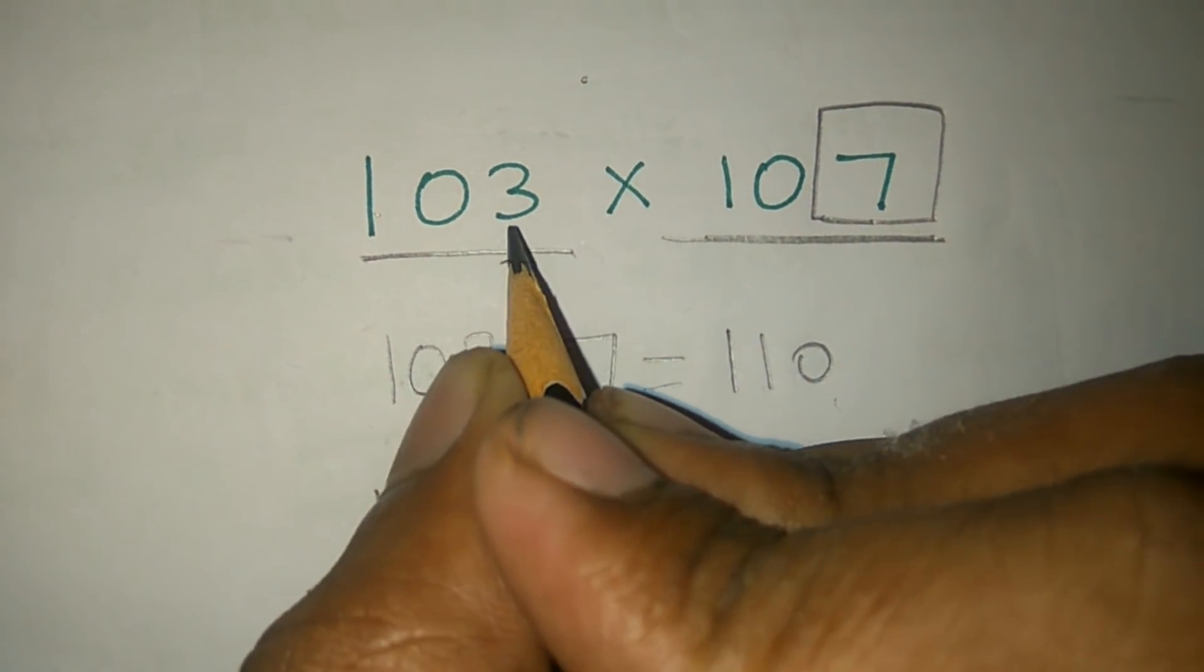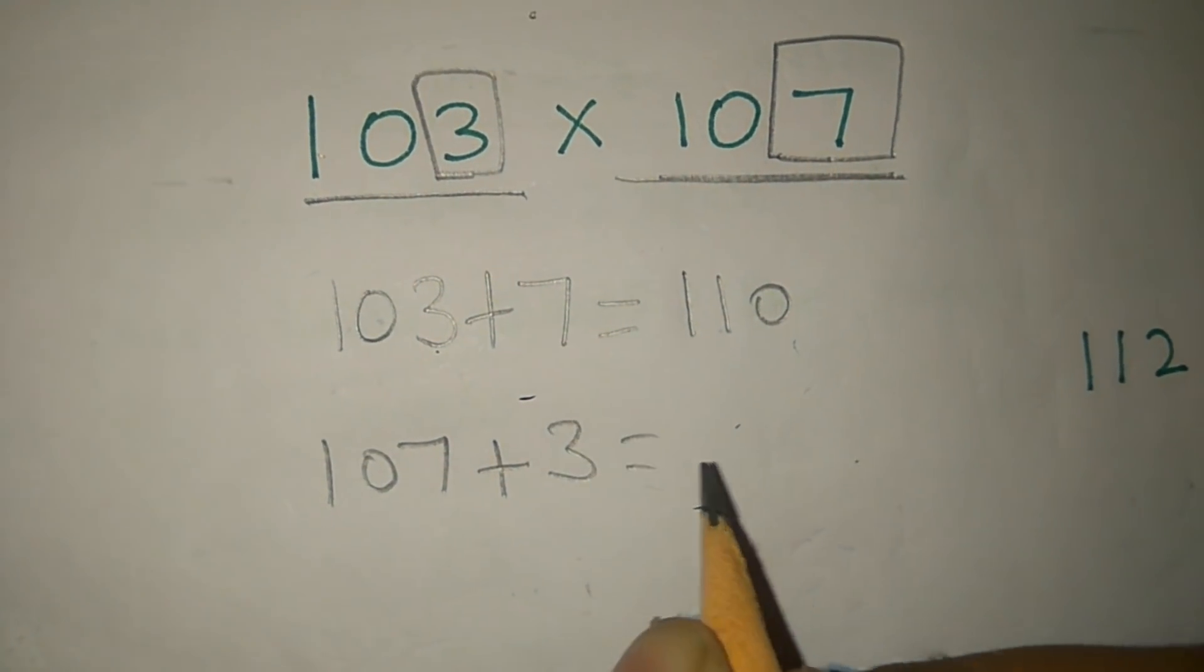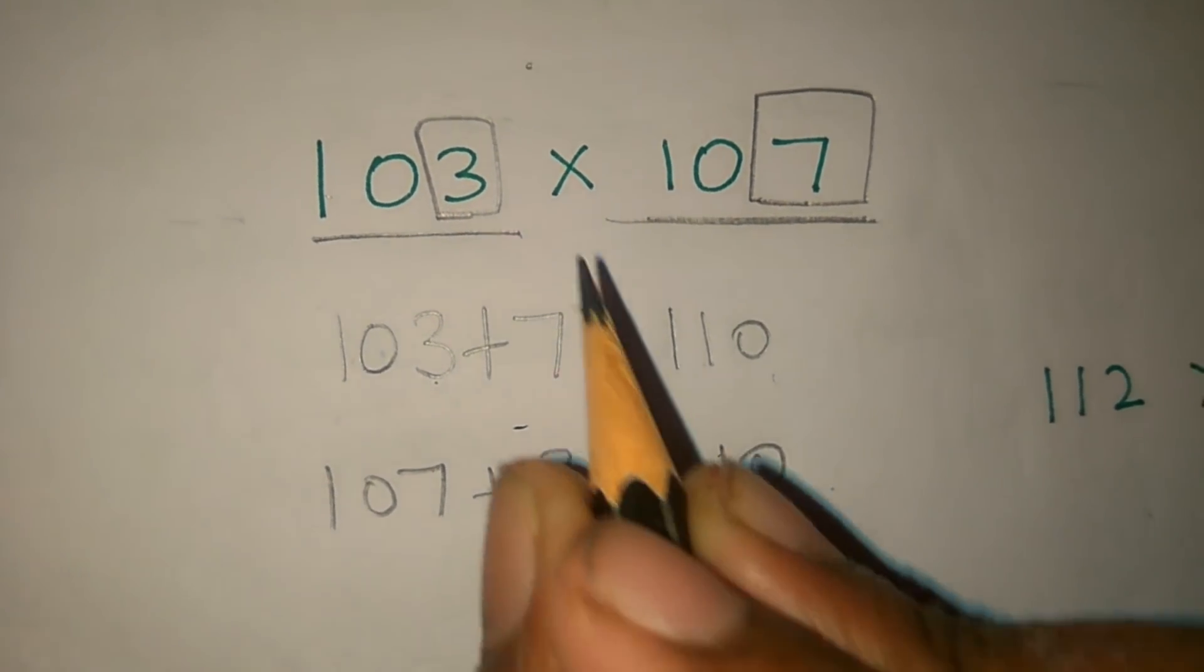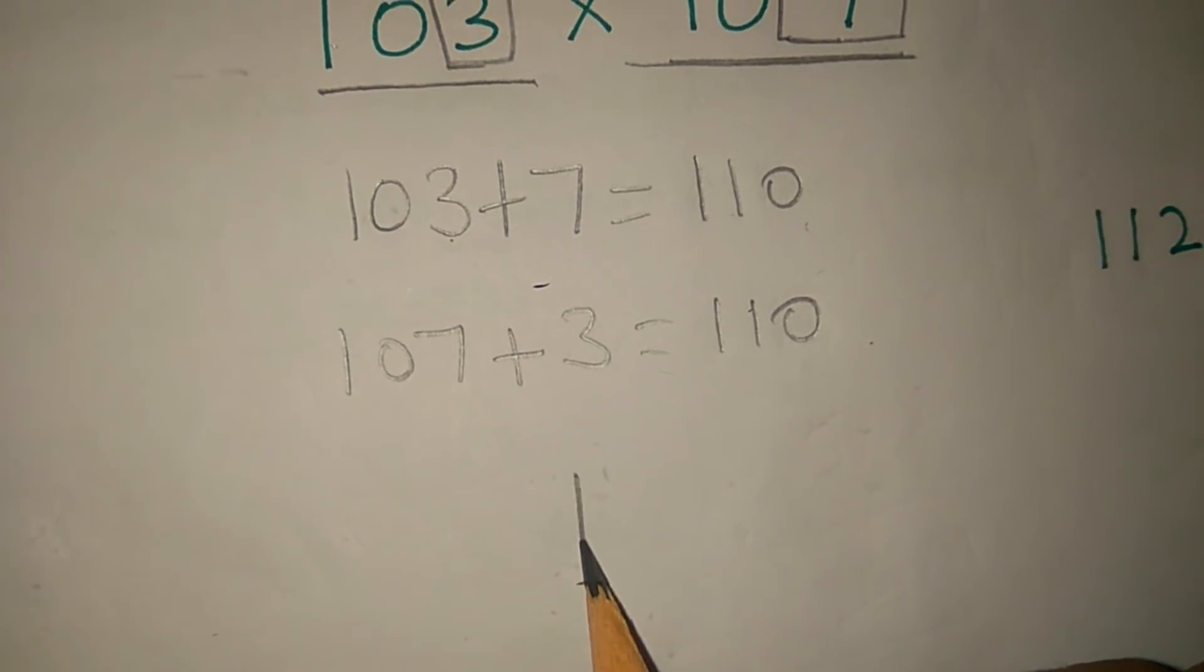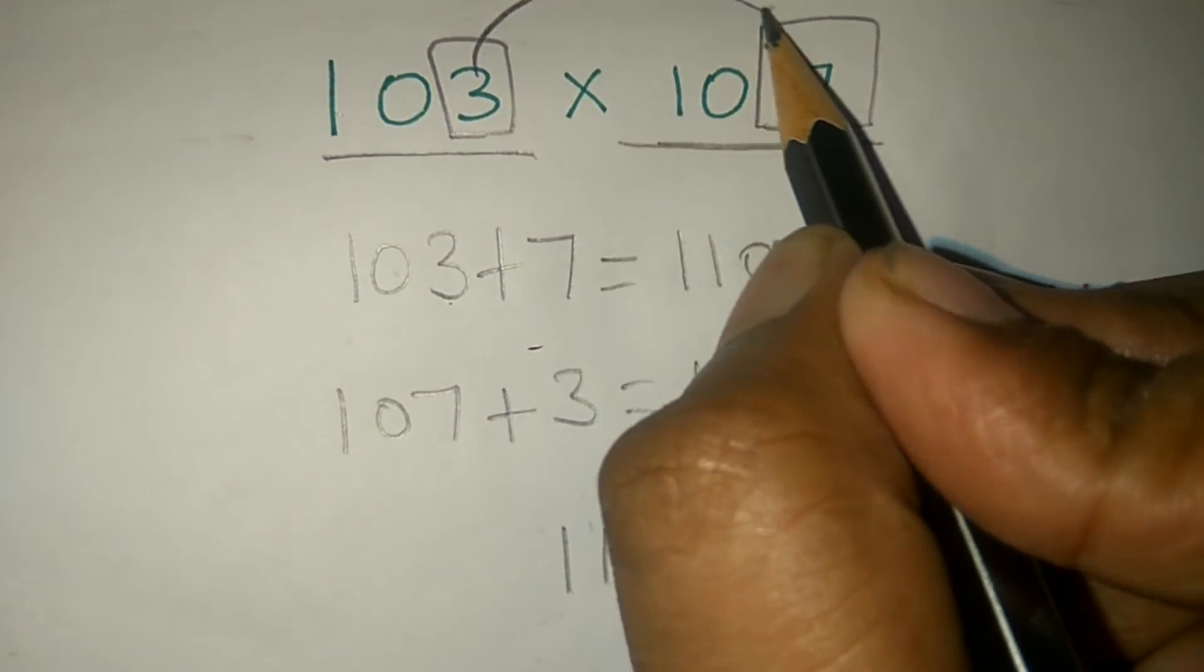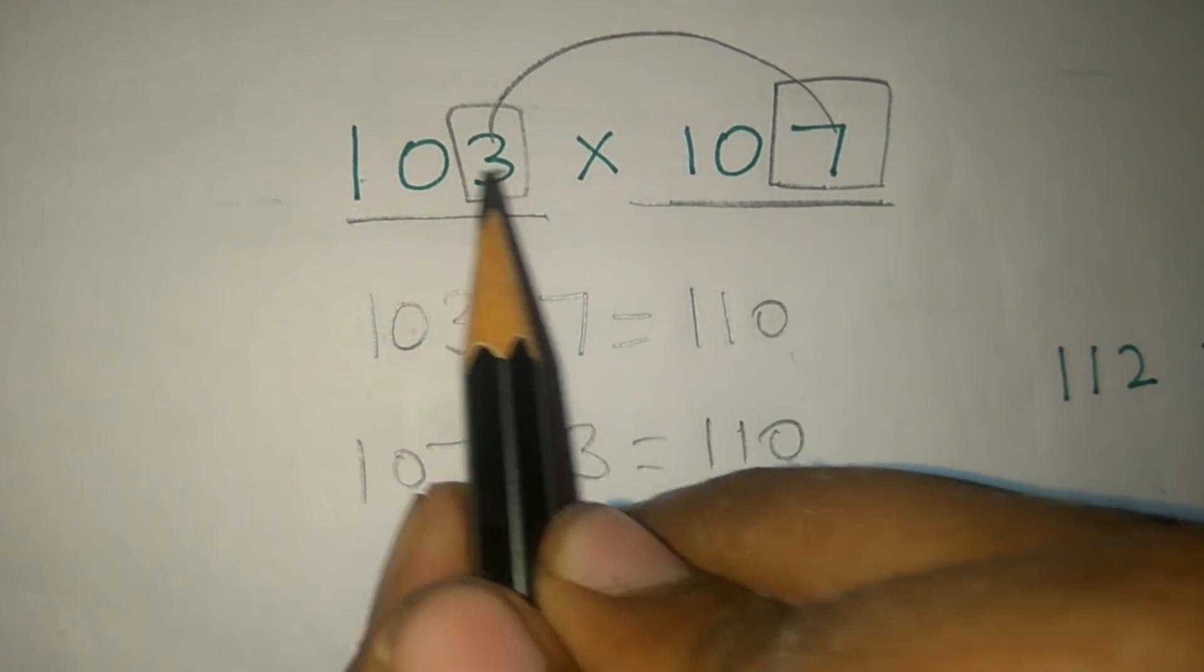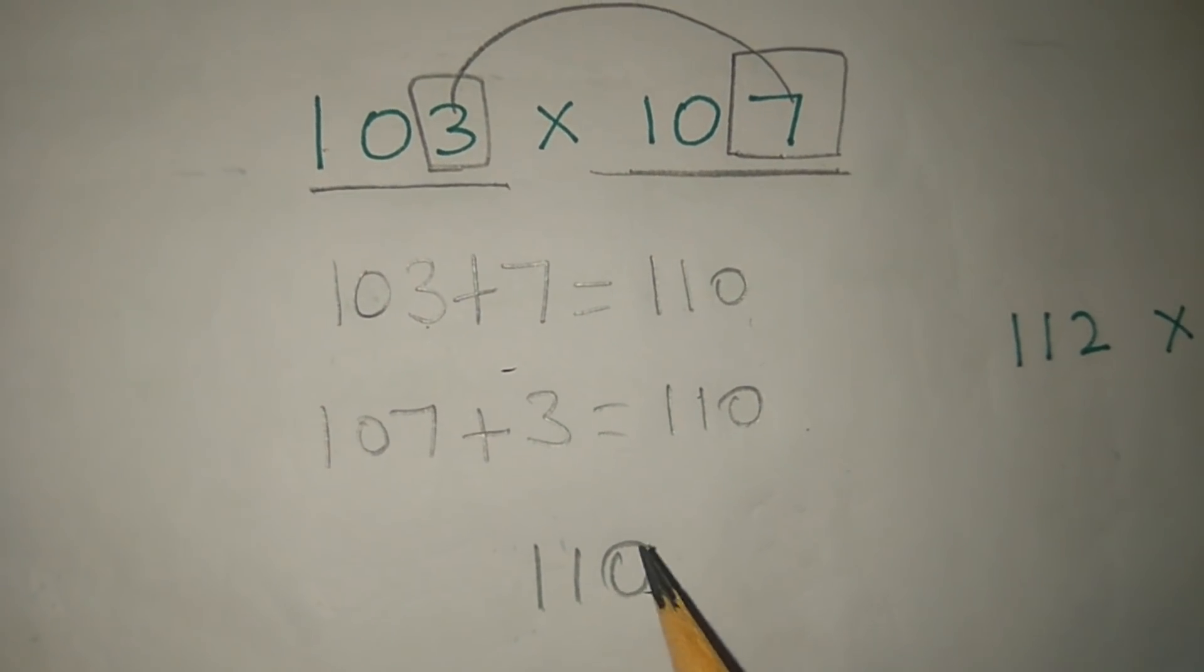103 has how many numbers? 3. So plus 3, 110. If we add 110, let's call this, let's write 110. Next, 3 x 7, 103 is extra 3. So if you do the same way, 3 sevens are 21.